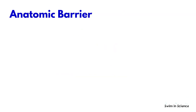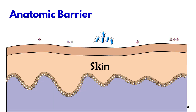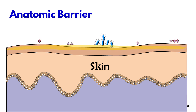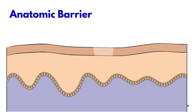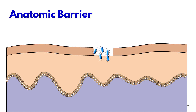Anatomic barriers are the first line of defense against infection. For example, skin acts as a protective barrier that prevents the entry of pathogens into the body. It also produces an oily secretion called sebum, which has an acidic pH that inhibits the growth of most microorganisms. Breaks in the skin due to scratches, wounds, or insect bites therefore lead to infection.